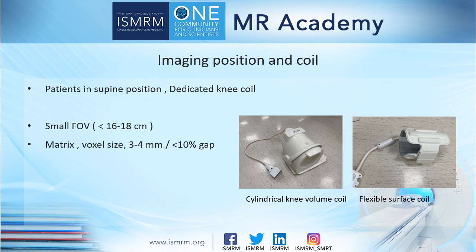Usually, a small FOV is needed for the knee. The typical matrix is at least 256, but usually more than 320. A less than 10% slice gap is recommended for the knee.